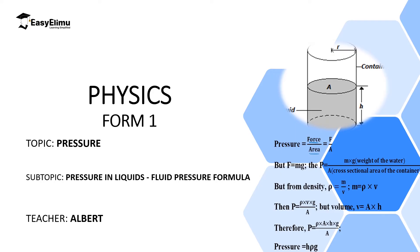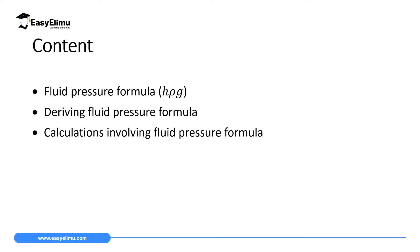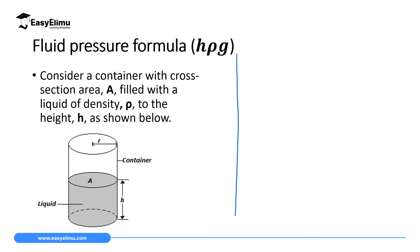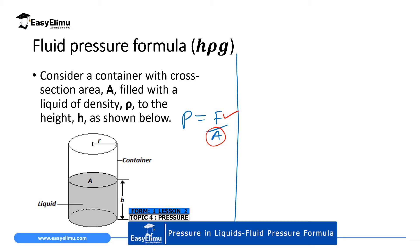My name is Albert. By the end of this lesson I expect you to be able to define a fluid, derive the fluid pressure formula, and do some numerical calculations involving the fluid pressure formula. Since pressure in solids equals force over area, you need both force and area to calculate pressure. But how are we going to get the area of liquids, since liquids don't have a definite shape?